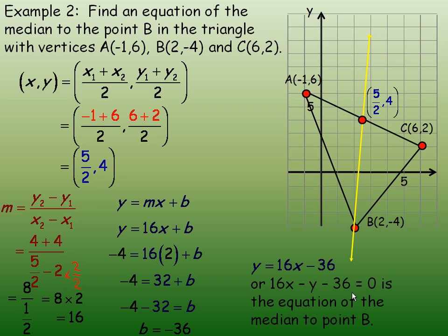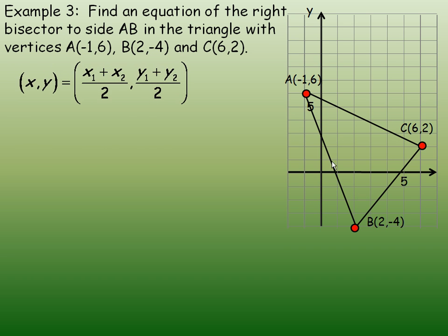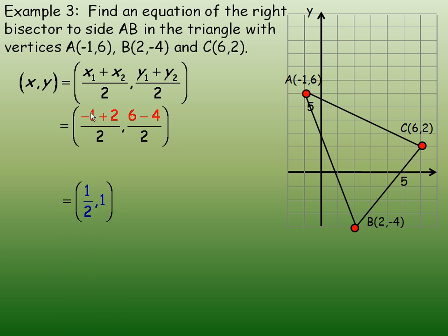One more example with the same triangle. We're asked to find the equation of the right bisector to side AB. The right bisector is the line that goes through the middle of this line segment and is perpendicular to it — not the median, but perpendicular. Let's find the midpoint of AB using the midpoint formula, using the coordinates of A and B. Negative 1 and 2 are added and divided by 2, and then 6 and negative 4. So negative 1 plus 2 is 1, and 1 over 2 is one half. And 6 plus negative 4 is 2; 2 divided by 2 is 1. So the midpoint is (1/2, 1).